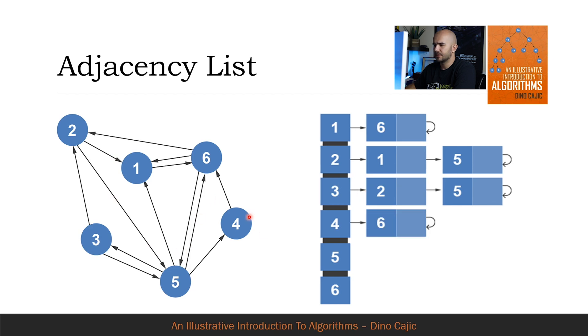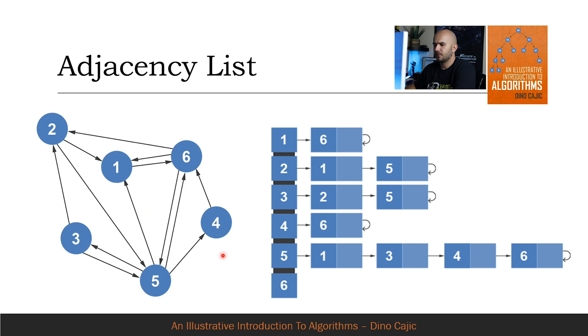Vertex 4 points to 6, as is illustrated here. And vertex 5 points to 1, 3, 4, and 6.